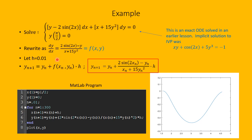Let's use Euler's method with h equal to 0.01. The iterative formula is y sub n plus 1 equals y sub n plus f of x sub n, y sub n, times h. Substituting our function f, the formula becomes y sub n plus 1 equals y sub n plus the fraction 2 sine 2x sub n minus y sub n, over x sub n plus 15 y sub n squared, times h.